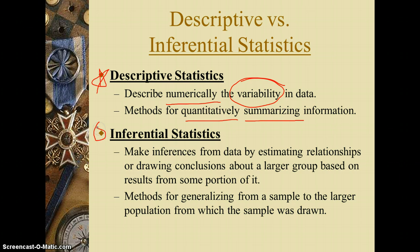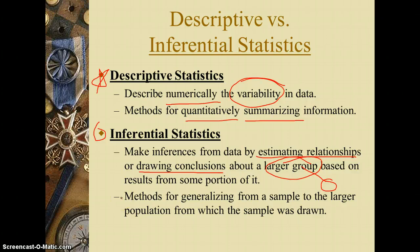Later on we'll be talking about inferential statistics. Inferential simply means that we're making inferences from data by estimating relationships or drawing conclusions about a larger group based on results from some portion of it. We take a smaller sample, and methods for generalizing from that sample to the larger population are really what we're doing in inferential statistics. With inferential statistics, we're trying to estimate or draw conclusions about a larger group based on what we know about a smaller group.